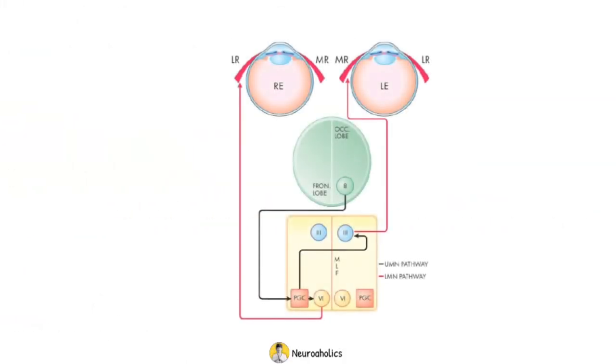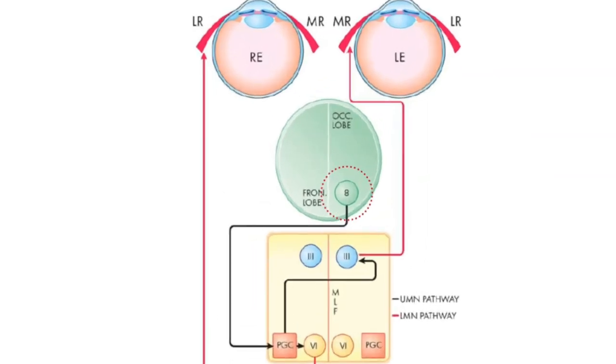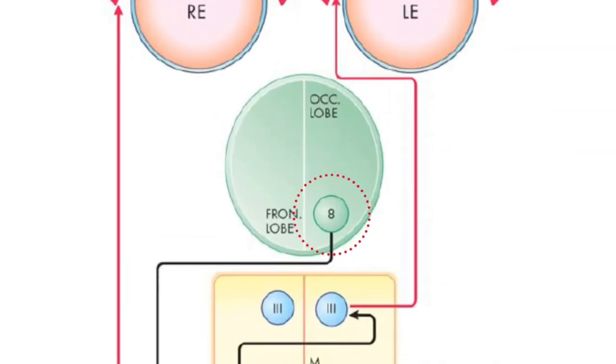So, the horizontal gaze or horizontal saccadic eye movement is controlled by two interconnected gaze centers. One control center is in the frontal lobe, the frontal eye field, Brodmann area 8. This area acts as a center for contralateral horizontal gaze.